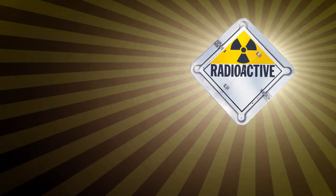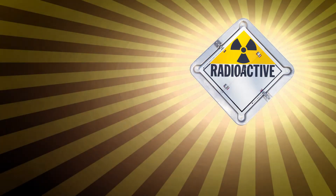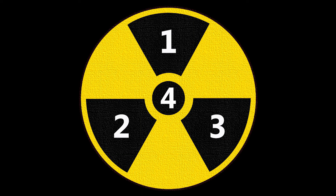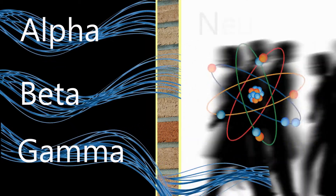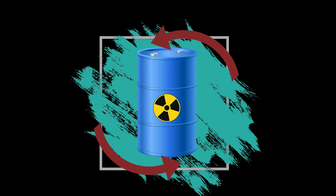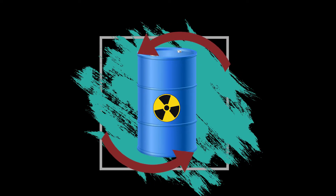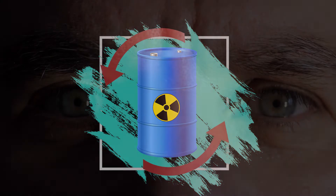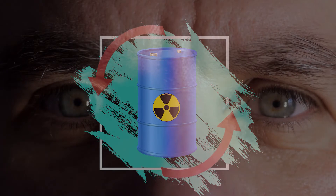Radioactive substances are substances that emit radiation. Radioactive elements come in four different types: alpha, beta, gamma, and neutron radiation. All four types are continually producing dangerous radioactive substances and are not visible to the naked eye.